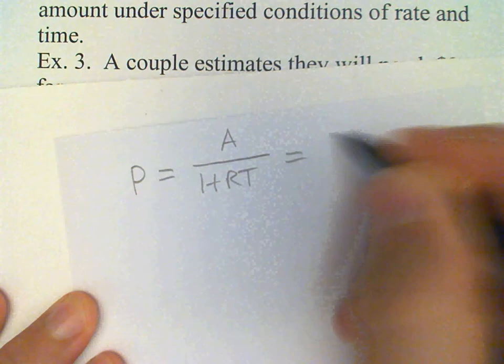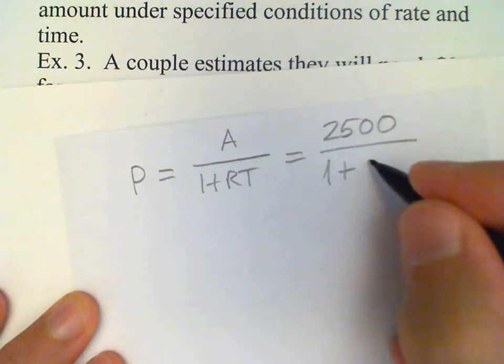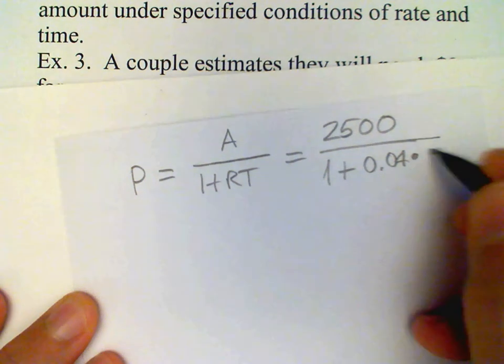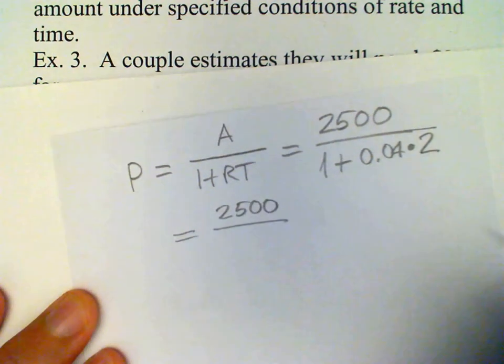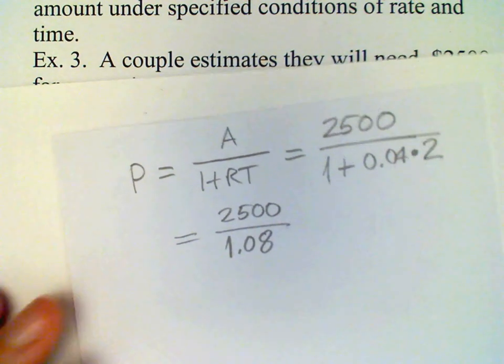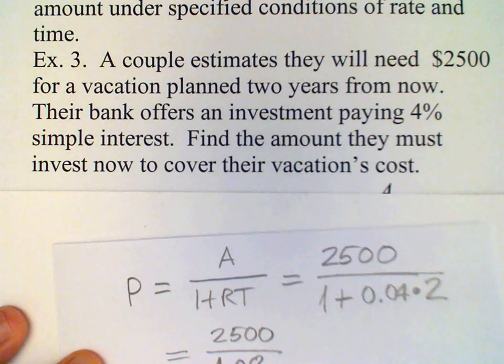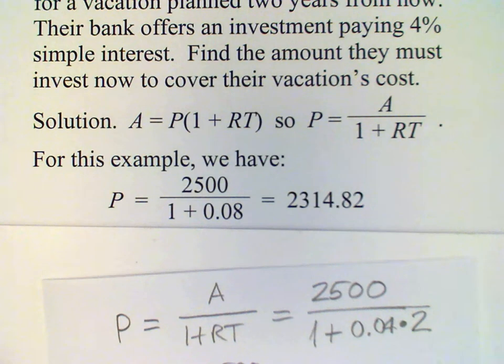So in this case the A is going to be the $2,500. And then (1 + R) is 4%. Converted to a decimal is 0.04. And then the time is two years. So this is $2,500 divided by 1.08. And when you do this calculation, the answer turns out to be $2,314.82.